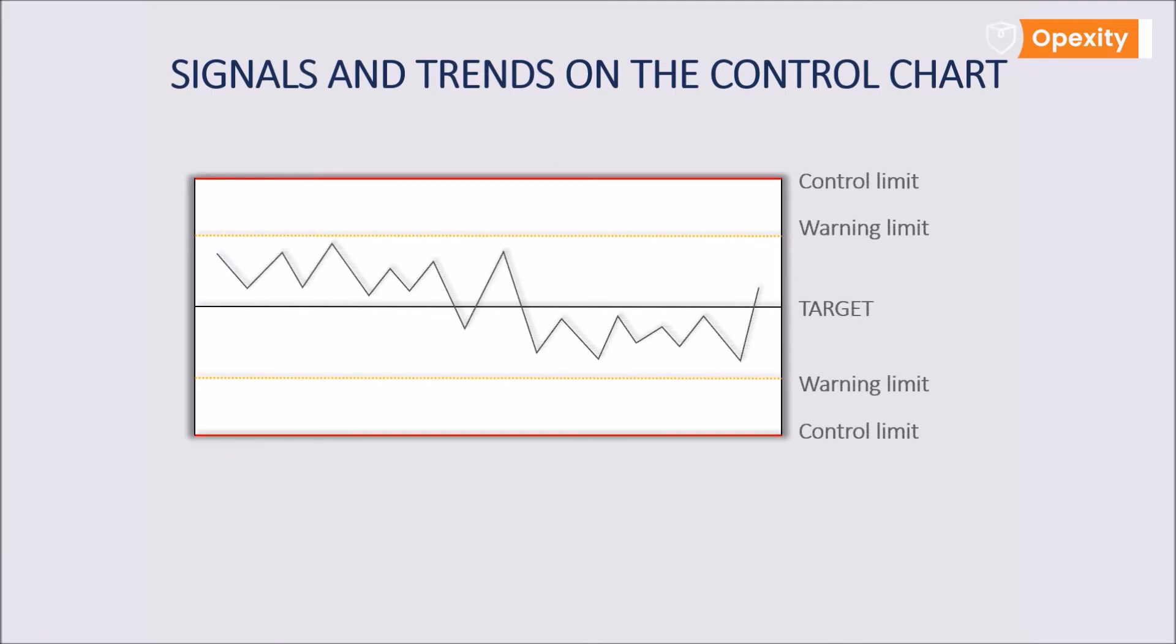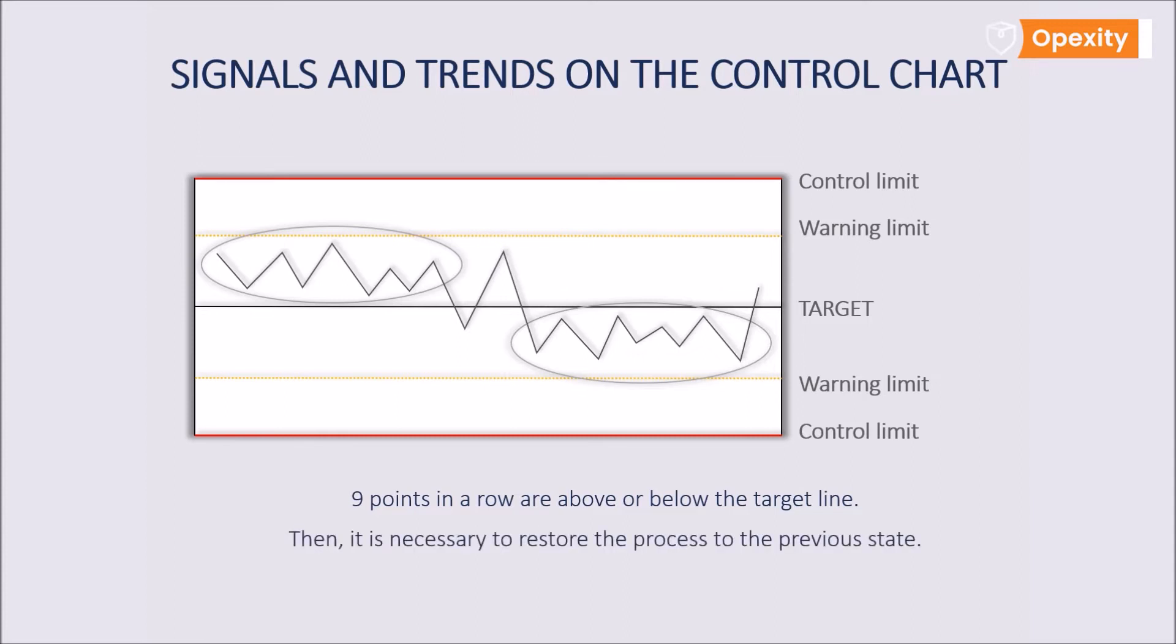The first of such examples is seeing the examined process reaching nine or more points in a row above or below the center line. This means that the process has moved to where such points have been recorded and there must be a reason. Despite the fact that the process is within the warning limits, it's necessary to immediately interrupt the process and the trend.